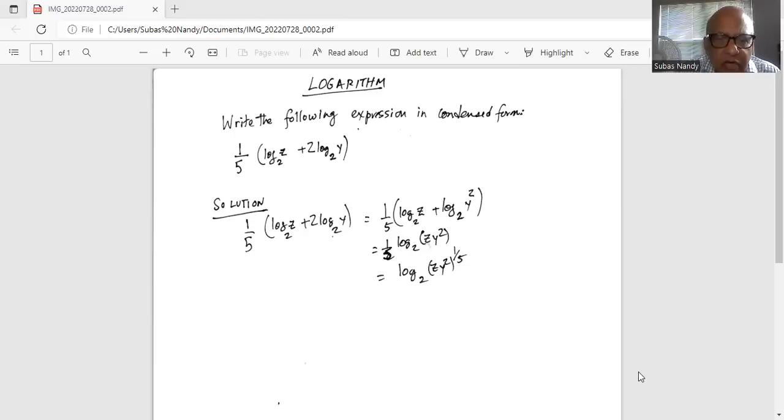So that is equal to one-fifth logarithm z to the base 2 plus 2 log y to the base 2 can be written as logarithm of y squared to the base 2 using the exponent rule of logarithm.